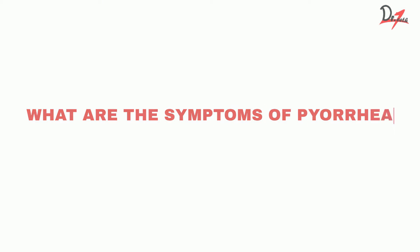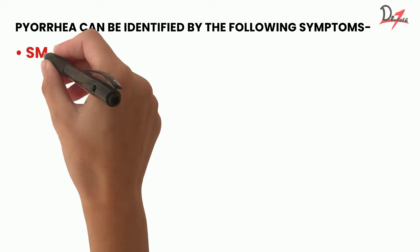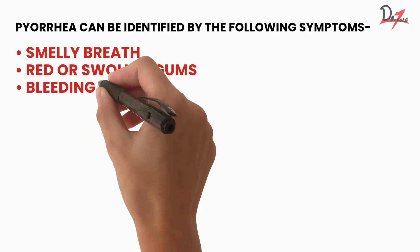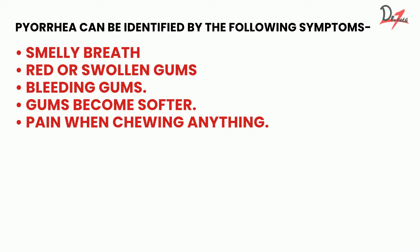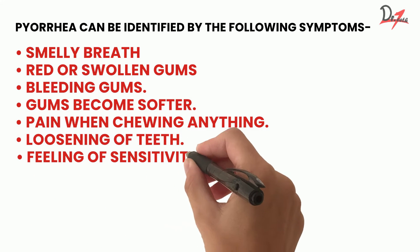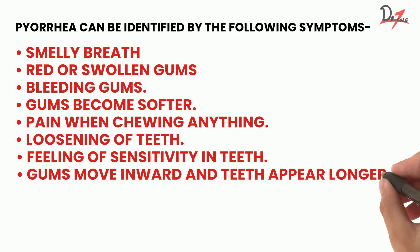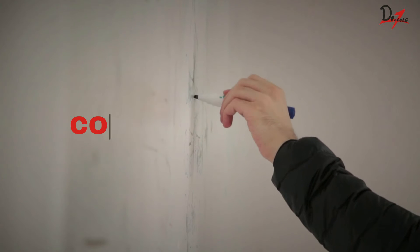Now, what are the symptoms of pyorrhea? Pyorrhea can be identified by the following symptoms: smelly breath, red or swollen gums, bleeding gums, gums that become softer, pain when chewing, loosening of teeth, feeling of sensitivity in teeth, and gums moving inward making teeth appear longer.